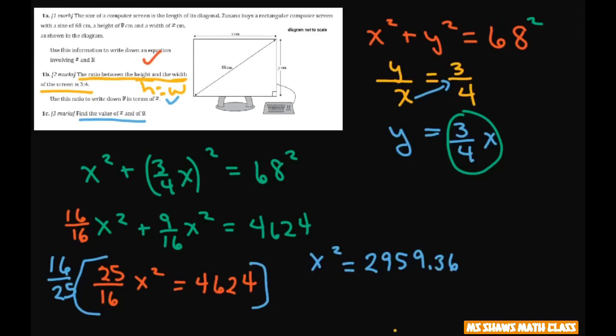And we're looking for a positive value. So when you take the square root of both sides, we only want the positive. So x is going to end up being 54.4 centimeters.